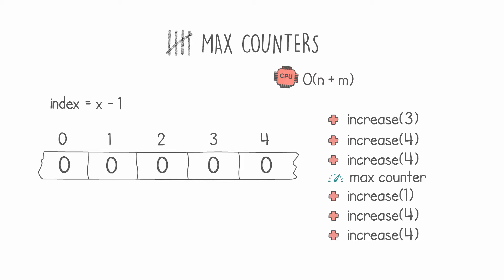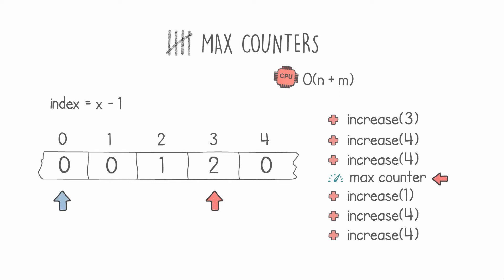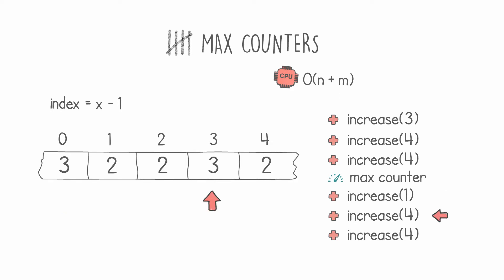In our naive solution we process each instruction one at a time starting from the first one. In this example the first one is to increment counter number 3, which in our array is at index number 2, and increase it. Then we move to our next instruction and increment our fourth counter, and we do it again on the fourth. Then we get the max counter instruction, so we first find which is the max — in this case 2 — and then set every single counter to a value of 2. Then we continue processing the rest of the instructions, incrementing the first counter, then the fourth, and again the fourth.